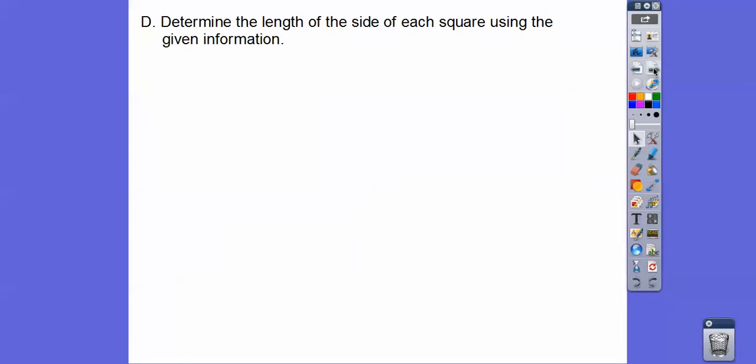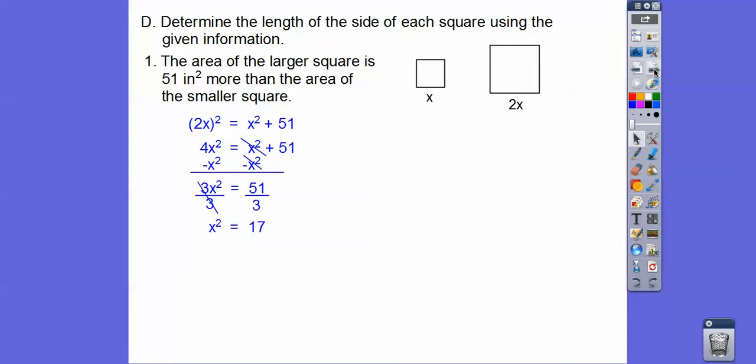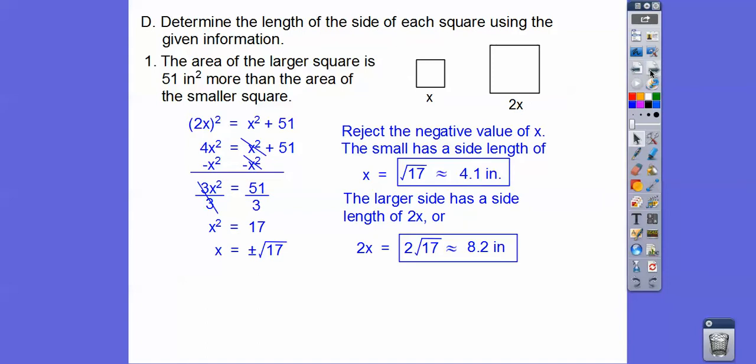Determine the length of the side of each square using the given information. This one's just like your number 21, just with a different number. The area of the larger square is, so the area of a square is length times width, or 2x times 2x, or just 2x squared. The area of this square is x squared. So this guy is, so is equals 51 more than. 51 more than means plus, so we're going to add 51 to the area of this guy, which is x squared. Square them, and we'll subtract x squared from both sides, and then divide by 3. Then we get x squared equals 17, so x is plus or minus the square root of 17. Since we're dealing with a geometric figure, we can disregard the negative sign. So the small side has length square root of 17 inches, which is about 4.1 inch, and the larger side has a length of 2 times that, which is 2 root 17, or about 8.2 inches.